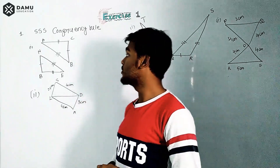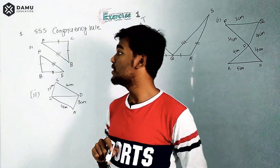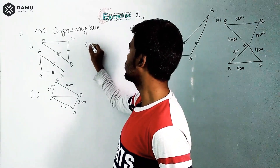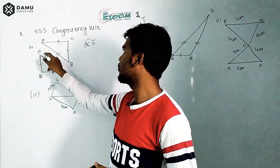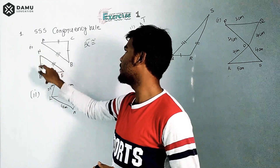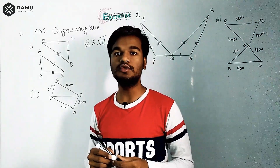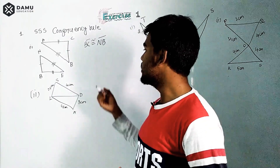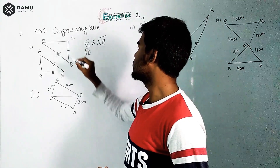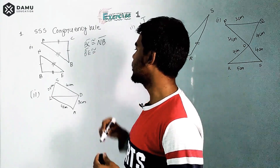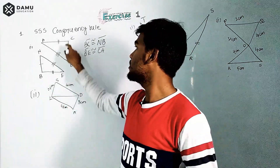Let's start with one side. BC — the line segment BC is congruent to NB. So BC and NB are congruent to each other. Next, BE in triangle NBE is congruent to CA in triangle ABC.